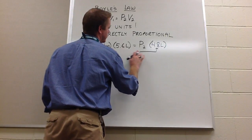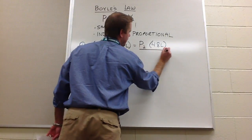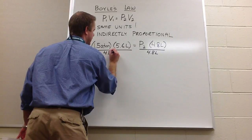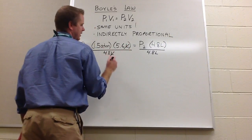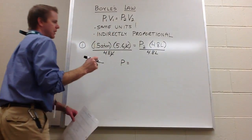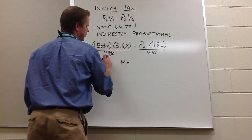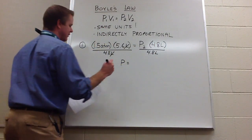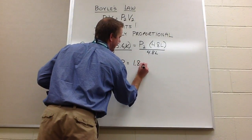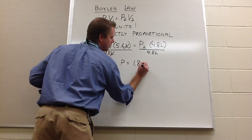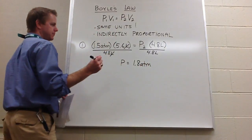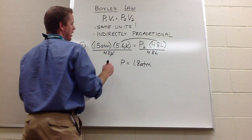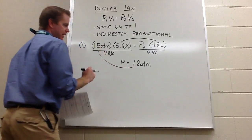You do your math — this is just basic algebra. Take both sides and divide by 4.8 liters. Liters cancels liters, leaving ATMs as your unit. P equals... now, two significant figures times two significant figures means the answer gets two significant figures. Therefore the answer is 1.8 ATMs. Does that make sense? We said if our volume went down, our pressure should have gone up. And indeed it did.